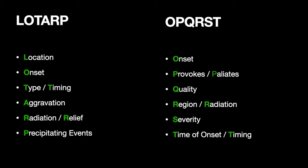LOTARP: L is Location — using chest pain as an example, is the pain retrosternal, radiating, off to one side, or in the abdomen? O is Onset — when did it start, did it come on gradually or suddenly? T is Type — is it sharp, dull, cold, squeezing? This applies even to patients who describe pressure rather than pain — we can still use LOTARP or OPQRST to assess that.